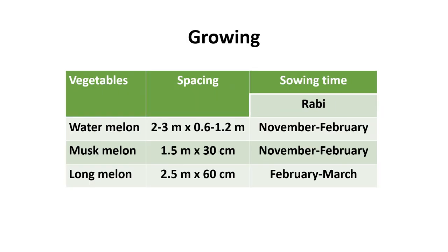Like most vegetables, these crops are generally propagated by seeds. Watermelon, muskmelon, and long melon all grow generally as a pre-kharif season crop. Most of the time they are sown directly in the field; they are also grown in polybags and later transplanted in the field.